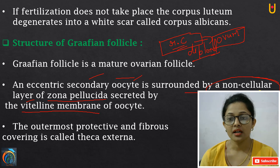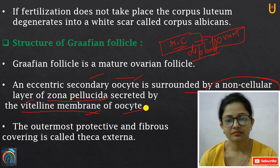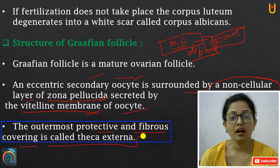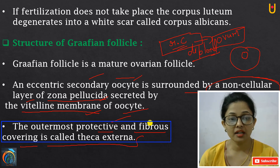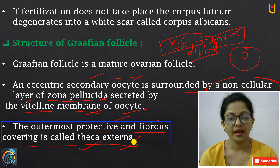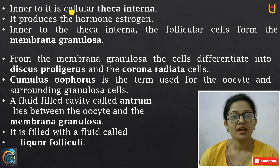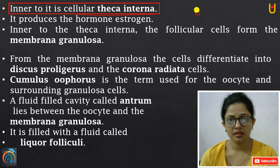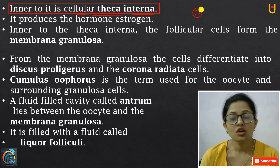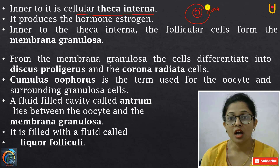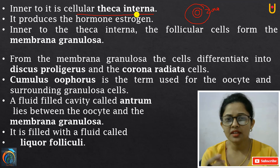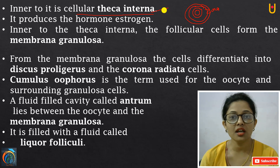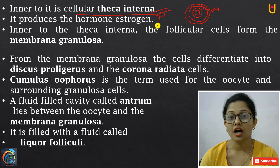A secondary oocyte is surrounded by a non-cellular layer of Zona Pellucida, and this layer is secreted by the vitelline membrane of the oocyte. The outermost protective and fibrous covering is called Theca externa. Inner to that is the cellular Theca interna, which produces the hormone estrogen.